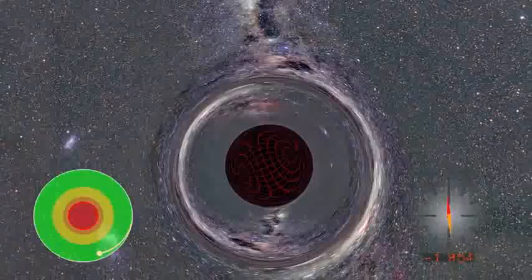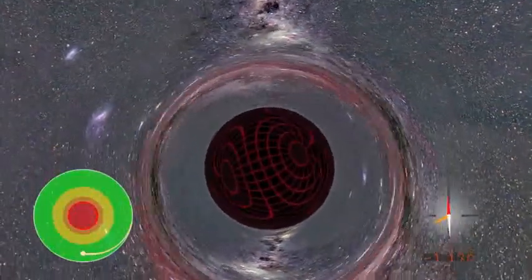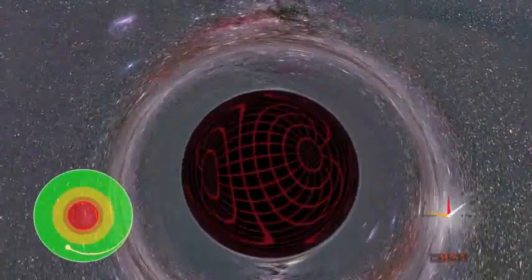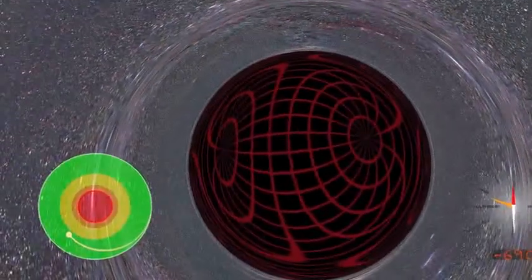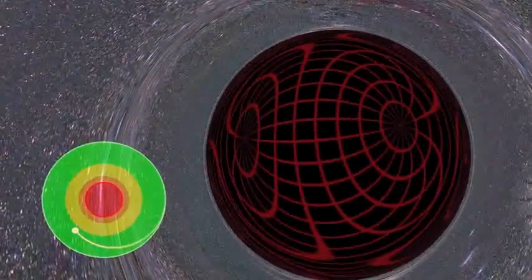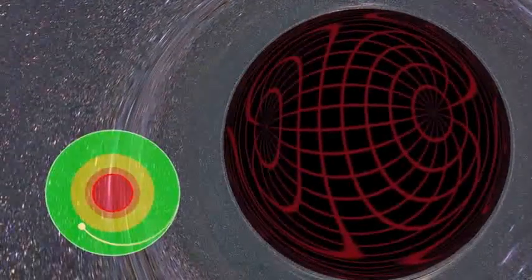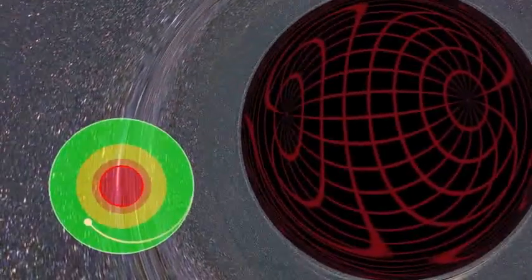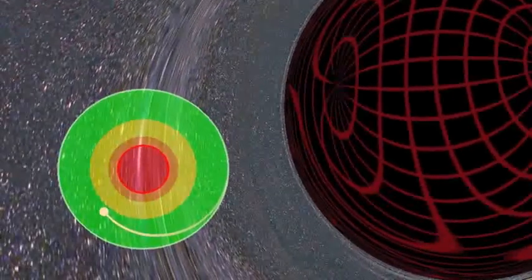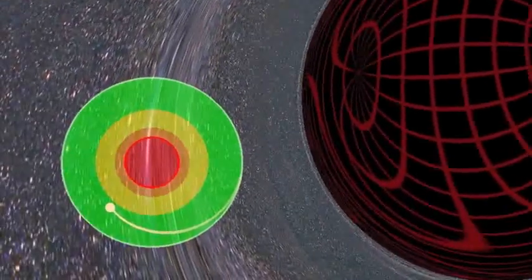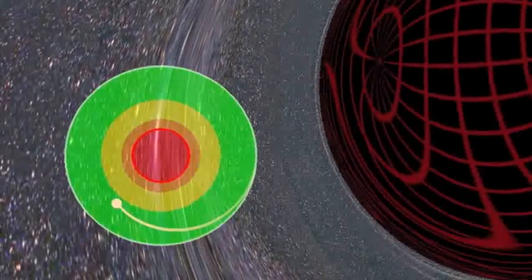About three Schwarzschild radii marks the location of the innermost stable orbit, the green area in our trajectory. Here, circular orbits are stable. Beyond, they are unstable. Any material accreting around this black hole finds its innermost edge here. Anything slightly closer falls into the black hole. So long as we remain in this region, we can still get out.